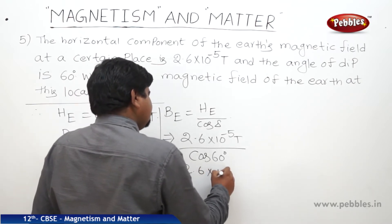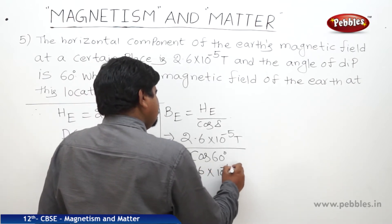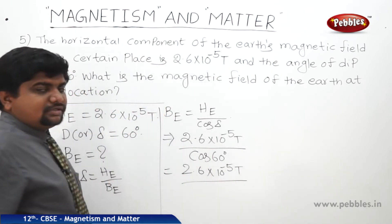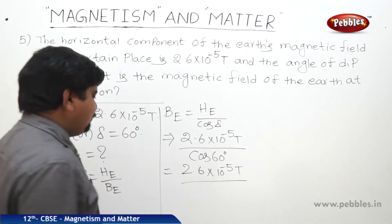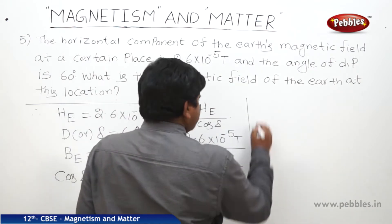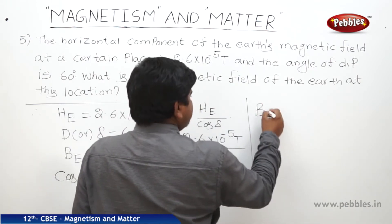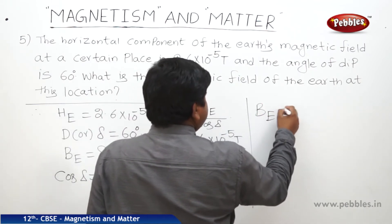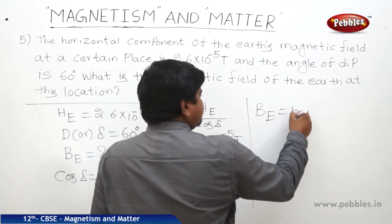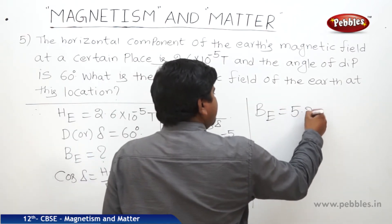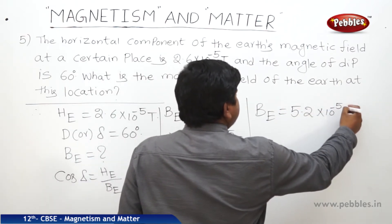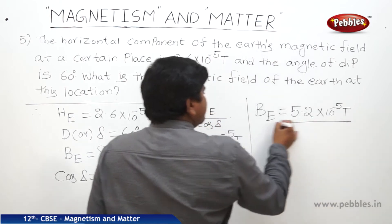Substituting: He is 2.6×10⁻⁵ tesla divided by cos(60°), which is 1/2. The 2 comes up, so Be is equal to 5.2×10⁻⁵ tesla.